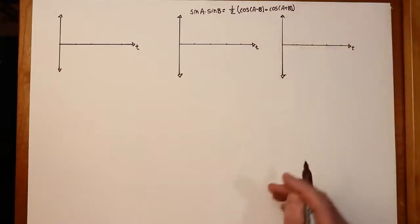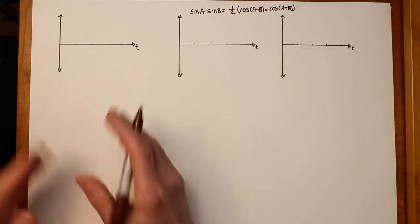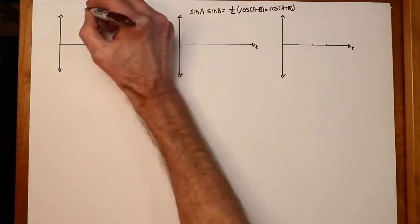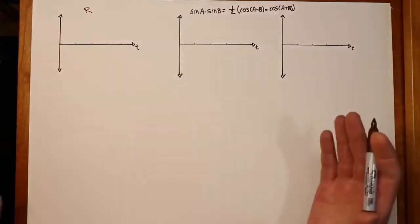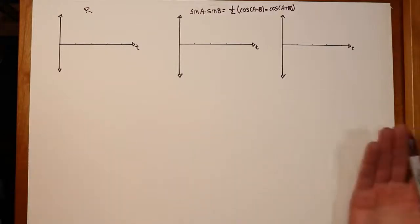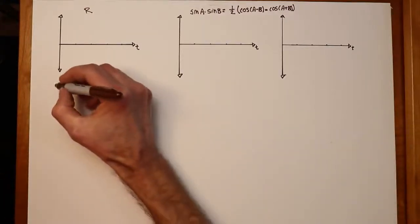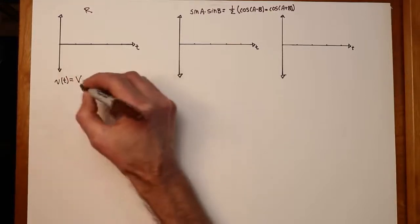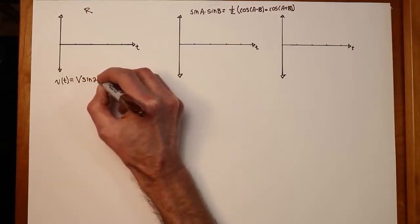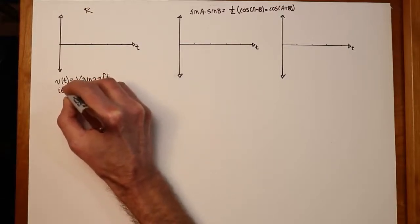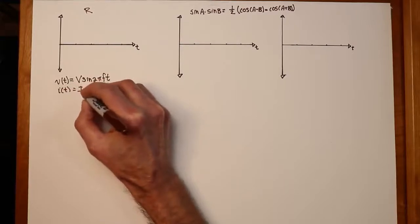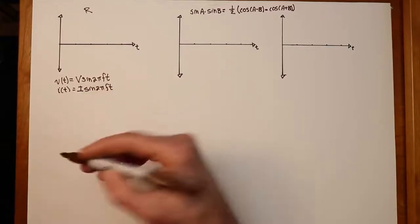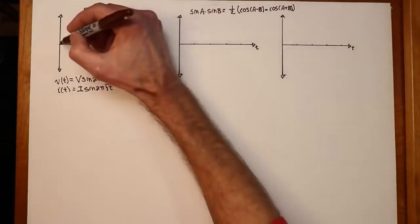Let's consider the case for a simple resistor — the resistive case. We know that current and voltage are in phase with a resistor. So if our voltage as a function of time is some peak value V times sine of 2πft, we have an associated current equal to some peak value I times sine of 2πft — there's no phase shift between the two.